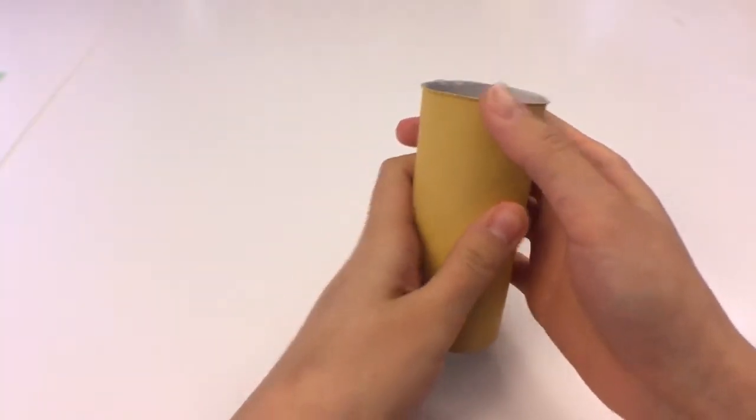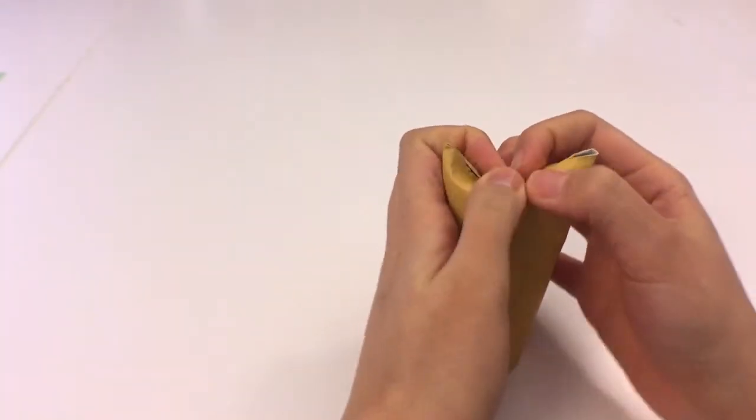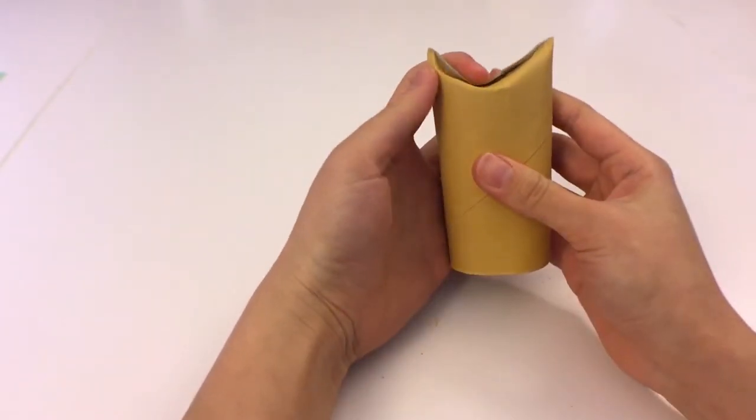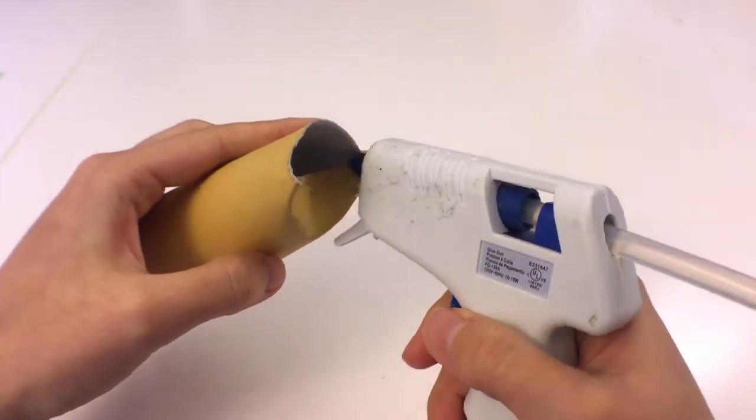Take one of the toilet paper rolls and on one side, you want to press down in the center to create the head part of the Korok. Once you are happy with the shape, go ahead and apply some hot glue to glue it in place.